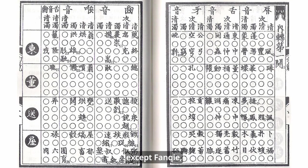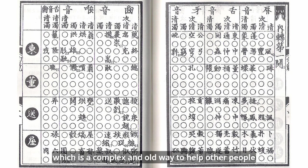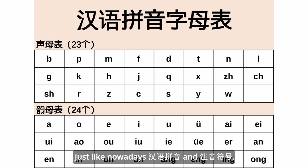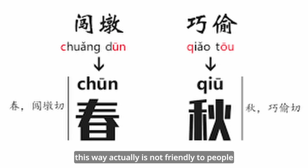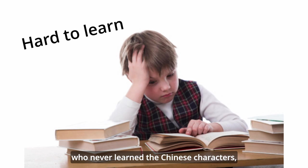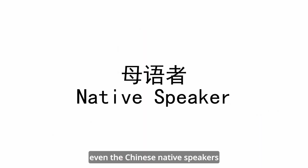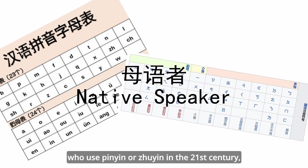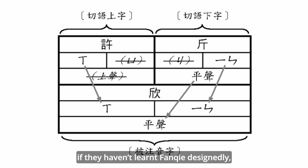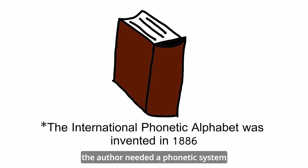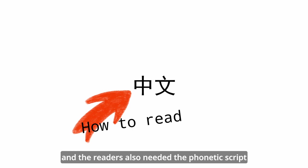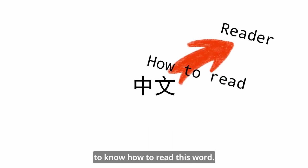Meanwhile, in China at that moment, except Fanqie — which is a complex and old way to help people know the pronunciation of Chinese characters — there was not a phonetic system, just like modern Hanyu Pinyin and Zhu Yin Fu Hao. Although Fanqie is a good way to label the pronunciation of Hanzi, this way is not friendly to people who never learned Chinese characters, even Chinese native speakers who used Pinyin or Zhu Yin in the 21st century. If they haven't specifically learned Fanqie, they can't use it as a phonetic script.